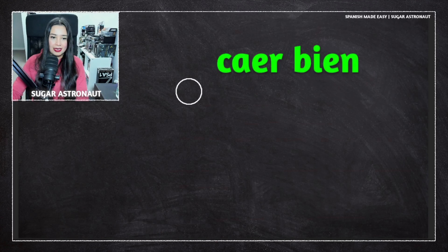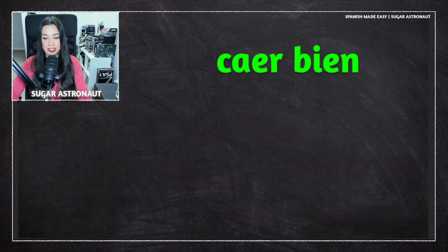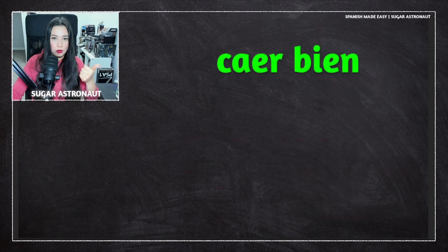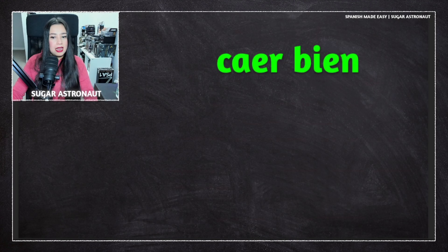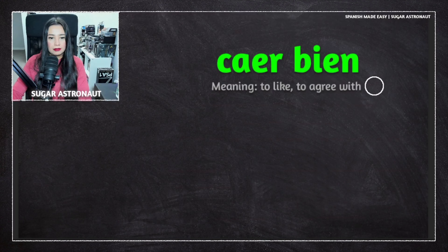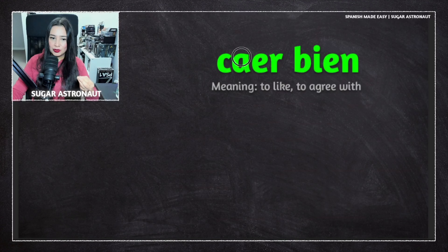Caer bien — this is a positive phrase. Caer is a verb meaning 'to fall,' but in this situation it means something else because it's a phrase. Bien means 'good' or 'well' — for example, if someone asks '¿cómo estás?' you can say 'bien, gracias.' Caer bien is quite different; it's still positive but has a different meaning and use: it means 'to like' or 'to agree with.'